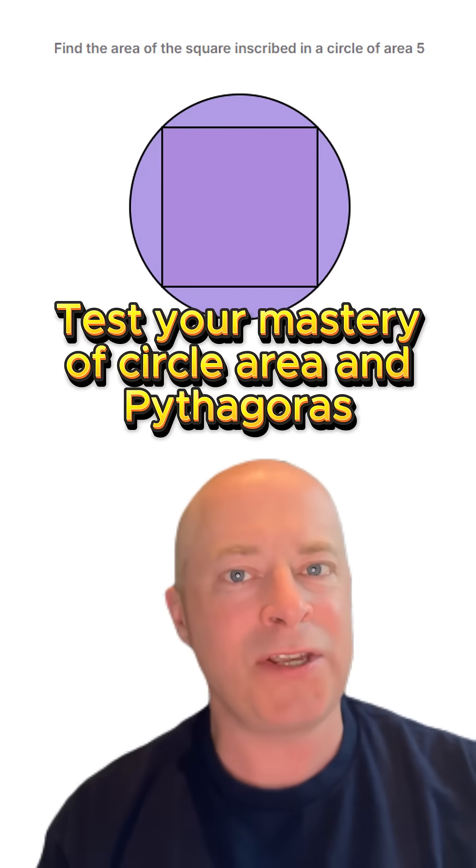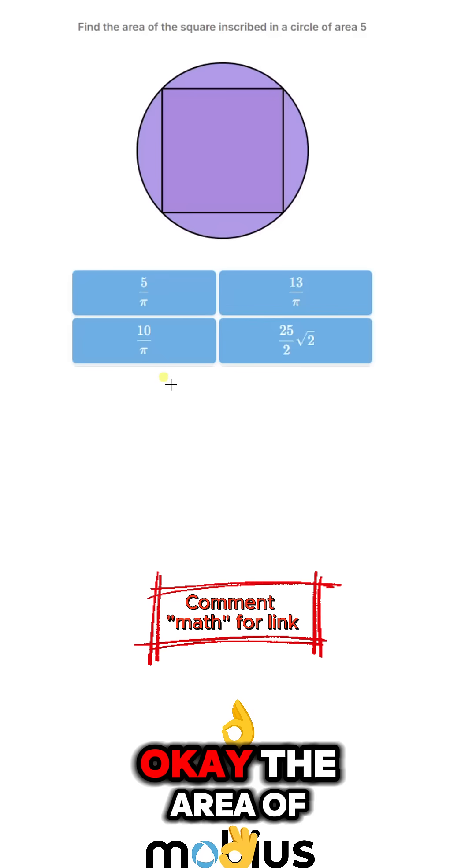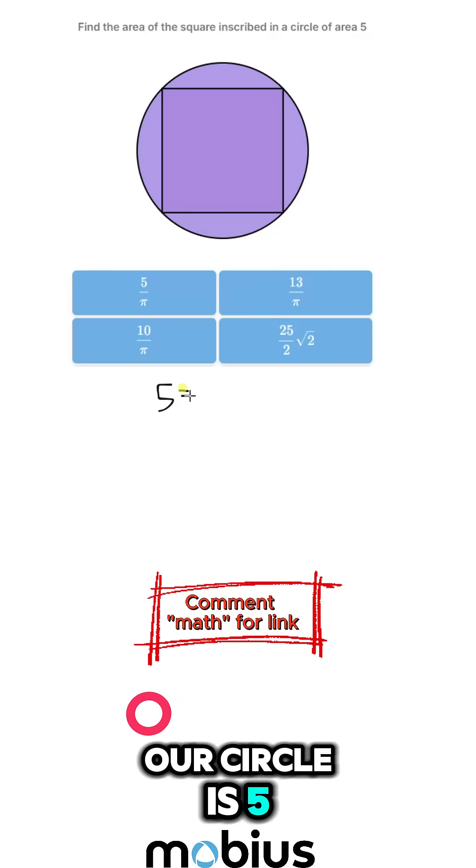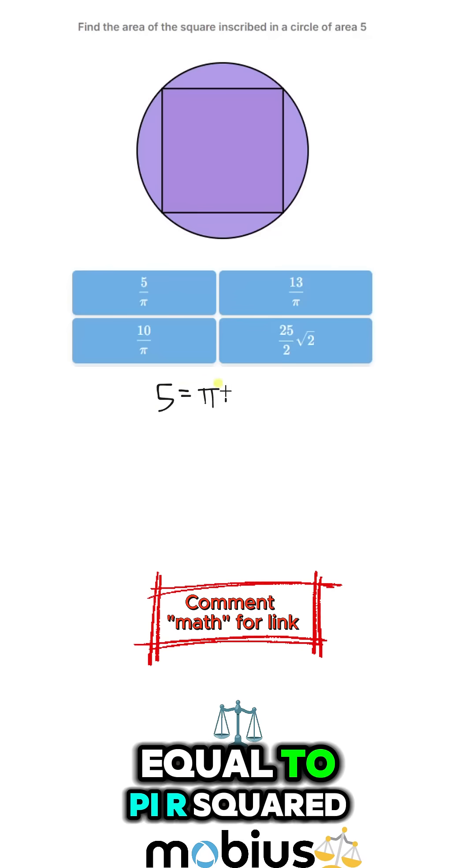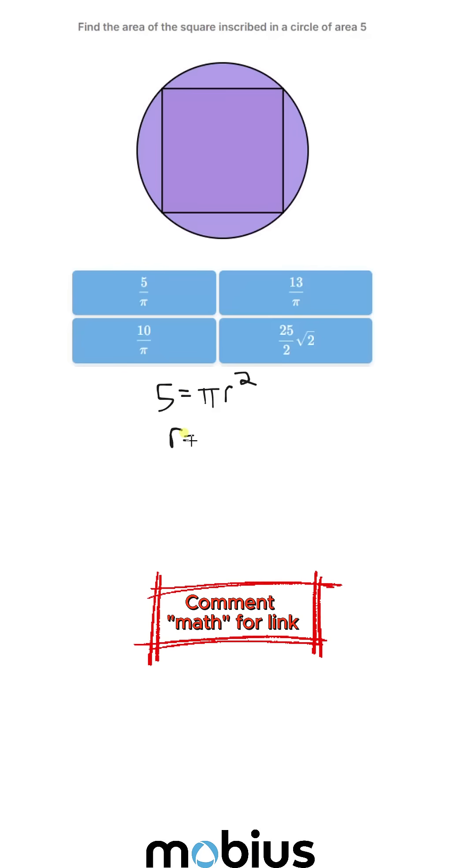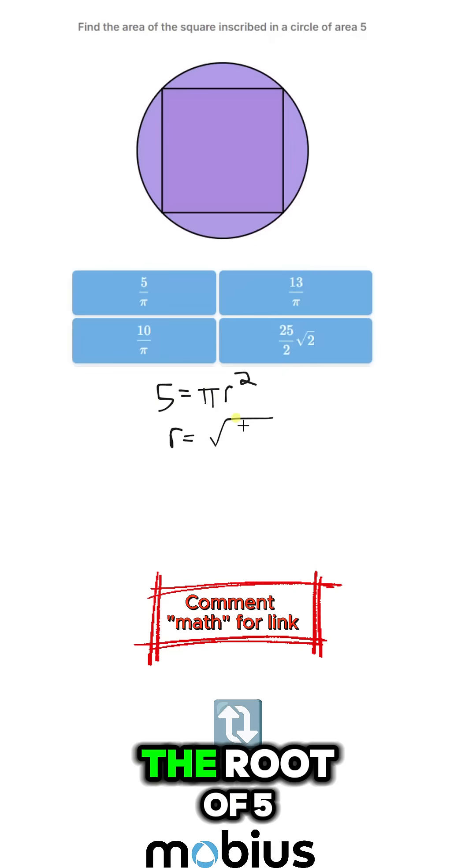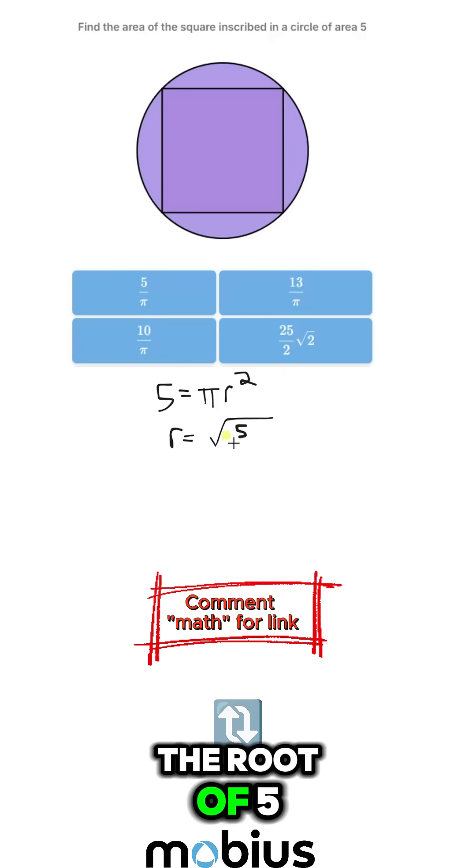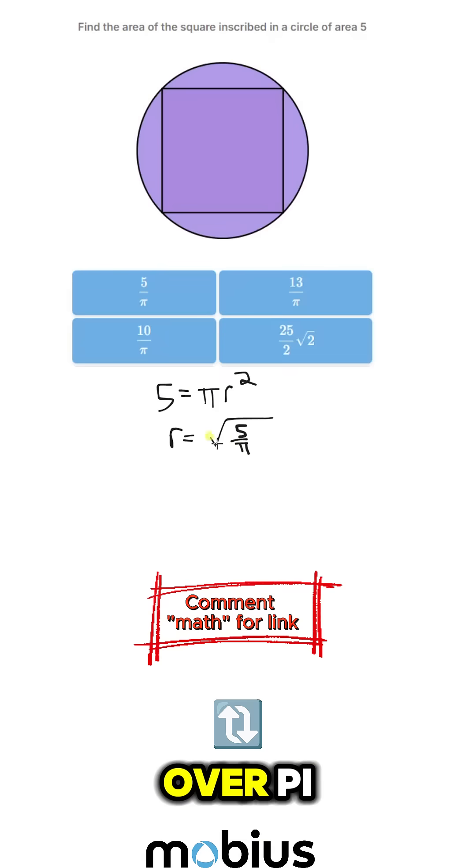This problem will test your mastery of both circle area and Pythagoras. Okay, the area of our circle is 5, and so that is equal to pi r squared. So if we simplify that for r, r is equal to the root of 5 over pi.